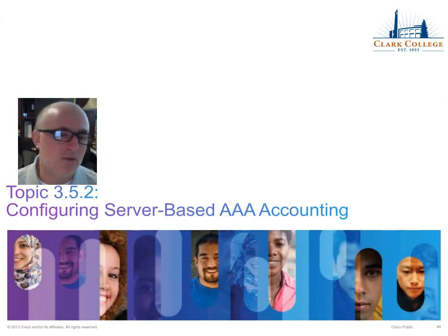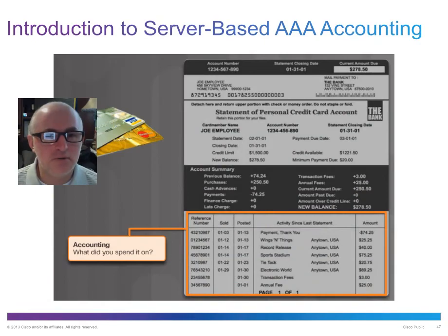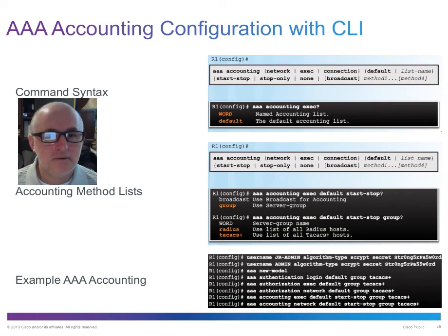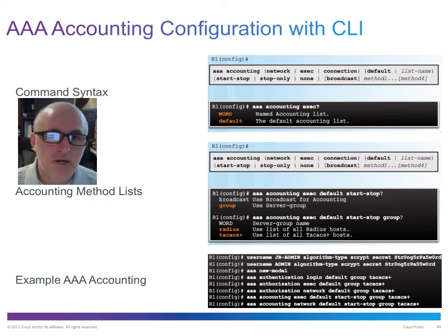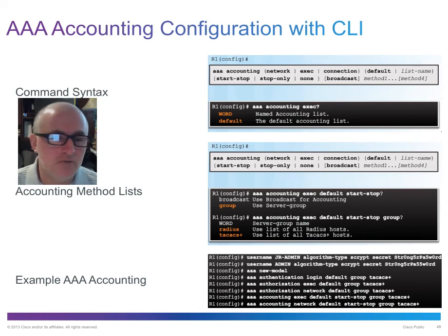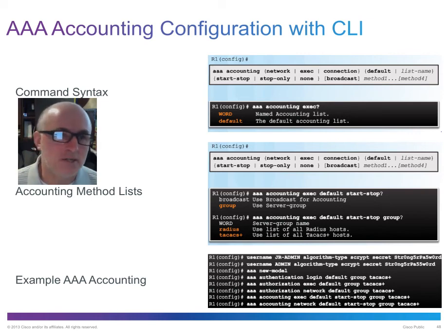For server-based authorization, a single router could act as AAA server while another acts as AAA client, though this isn't commonly done. Usually your AAA server will be a Windows or Linux machine, either handling AAA directly through the OS or using third-party software on top of that operating system to accomplish the AAA functions.